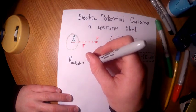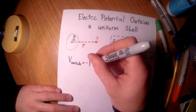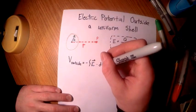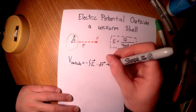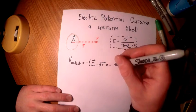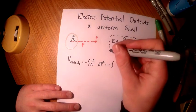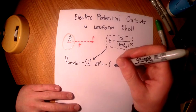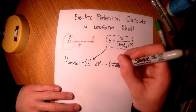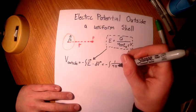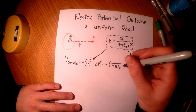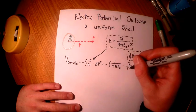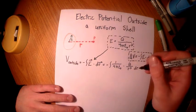We're going to start our equation with V outside is equal to the negative integral of E times dr. From here we're going to substitute in the electric field equation and take the negative integral of Q over 4 pi epsilon naught times 1 over r squared.